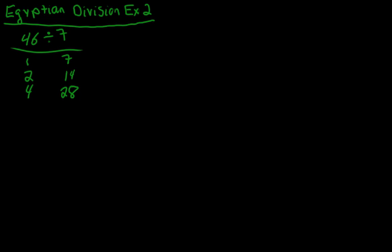We want to find out what numbers on the right we can add to get as close to 46 as we can without going over. If we look, in this case, it's 14 and 28, which correspond to the numbers 2 and 4.